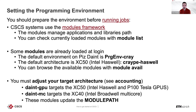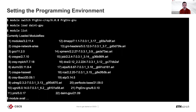'module list' gives the list of currently loaded modules; 'module available' gives the list of all possible modules. You need to adjust your target architecture before building your application. The 'daint-gpu' module targets the XC50 with GPU, and 'daint-mc' targets the XC40 multi-core Broadwell nodes. These modules update your module path and make the CPE Haswell or CPE Broadwell modules available, along with applications in the software stack built for GPU or multi-core nodes.